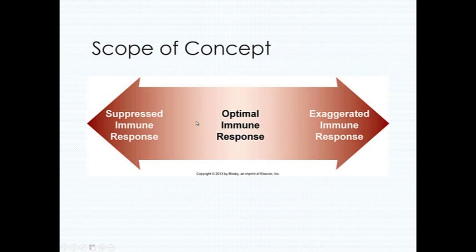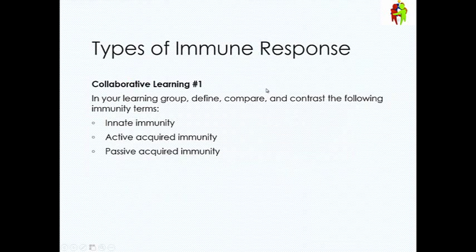In a normal healthy patient, you have a balance between the exaggerated immune response and the suppressed immune response, and that is your optimal immune response.